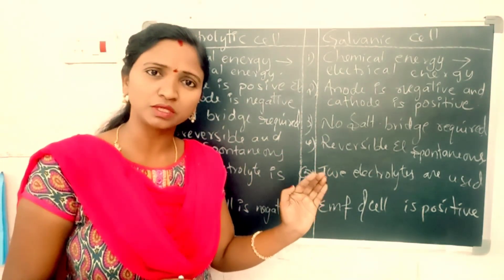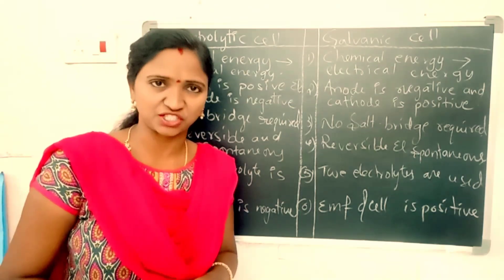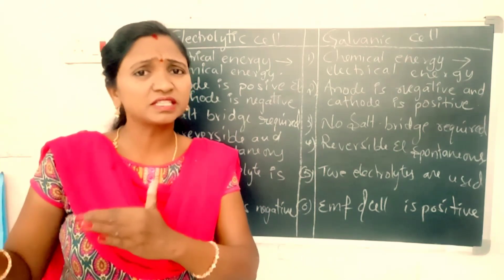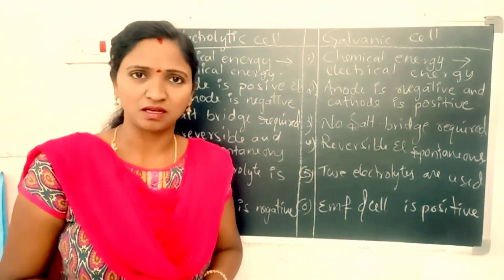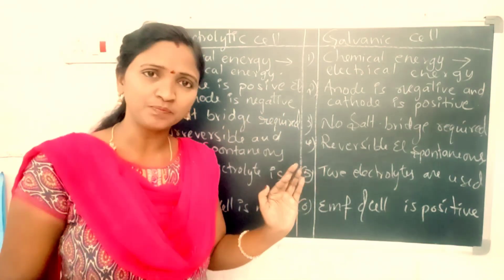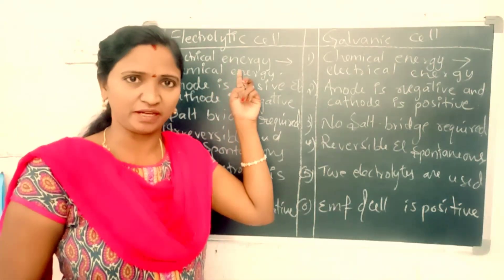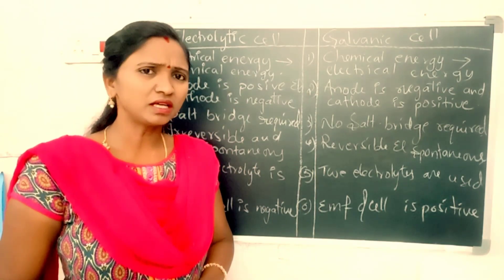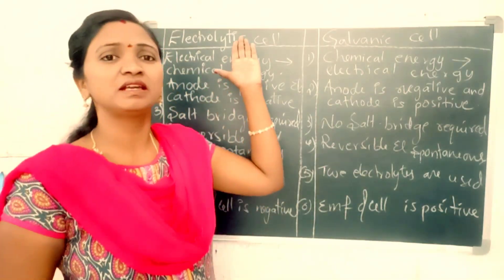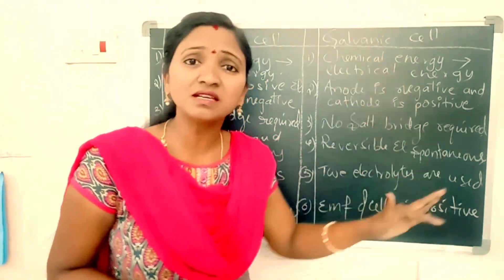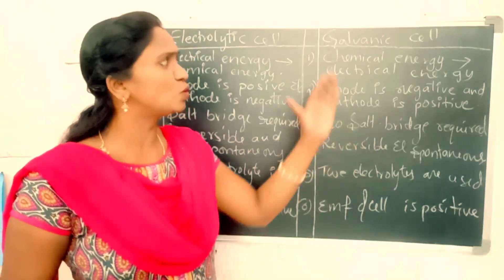In one half cell, oxidation reaction takes place, and in the other half cell, reduction reaction takes place. These oxidation and reduction reactions are chemical reactions, and electricity is produced from them. That's why galvanic cells convert chemical energy into electrical energy. In a galvanic cell, there is no special battery required — the galvanic cell itself acts as a source of electricity.